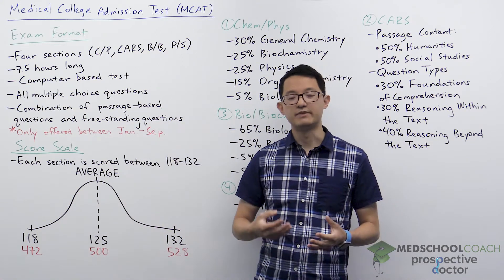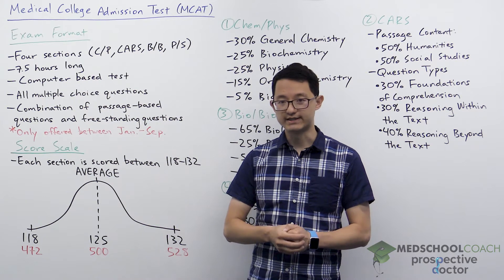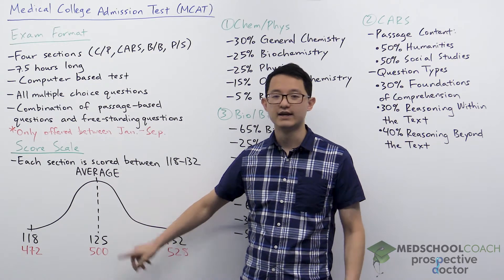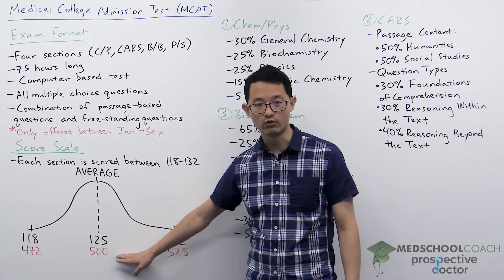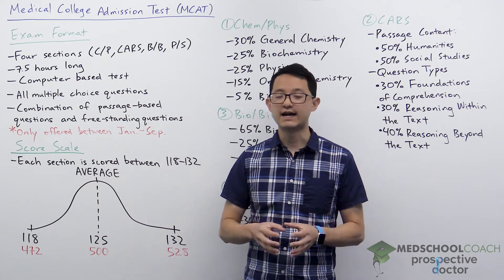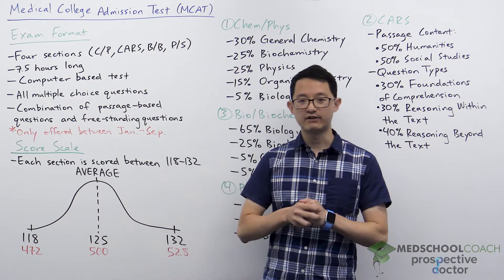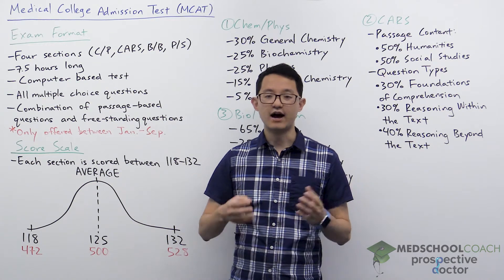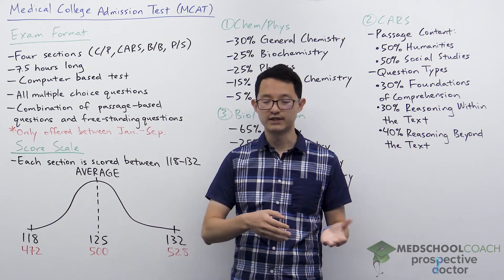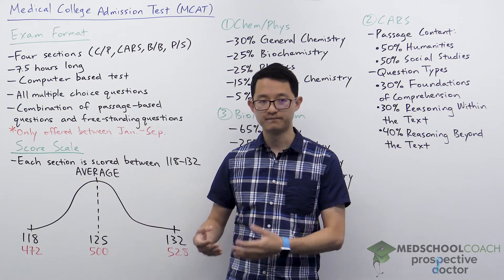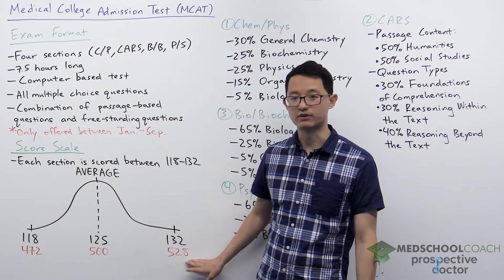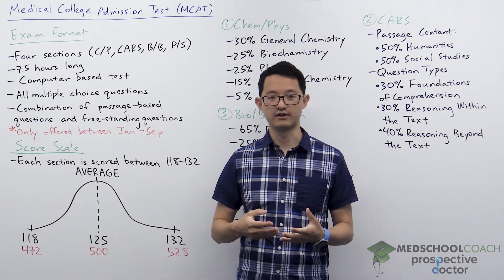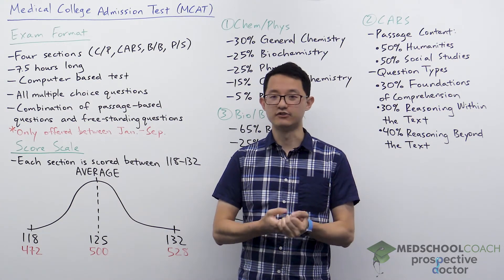The scoring system is very convenient for medical school admissions committees. Because the average score on a section is 125, multiplying by four means the average total score for the entire exam is 500. This makes it easy for admissions committees to see if a student is above average, meaning they scored above 500, or below average. In terms of what is a good target score, you'll want to look at the average GPA and average MCAT of the medical schools you want to attend.